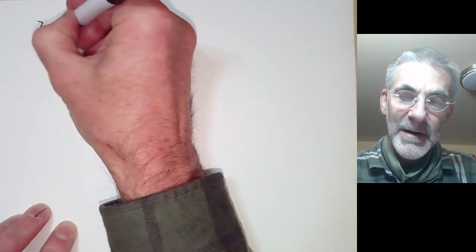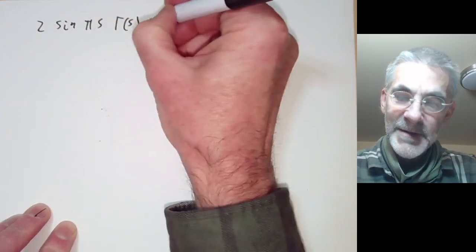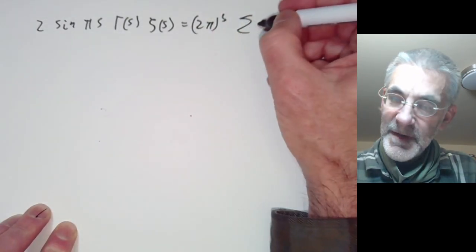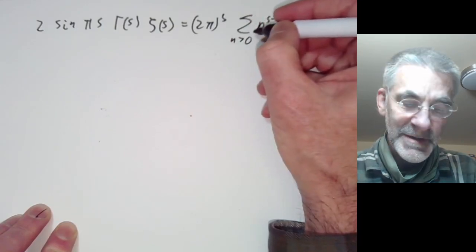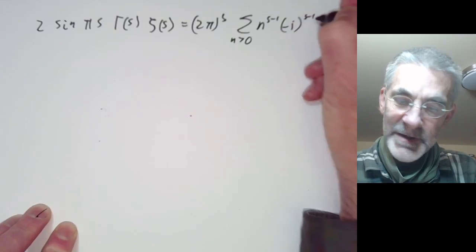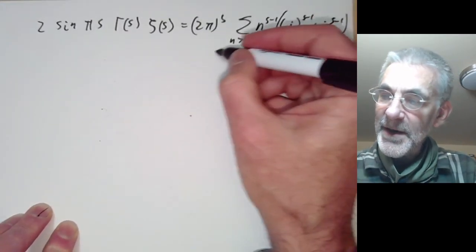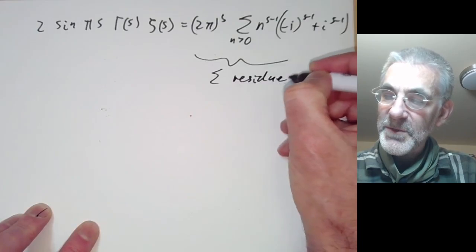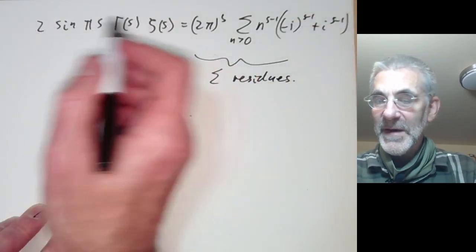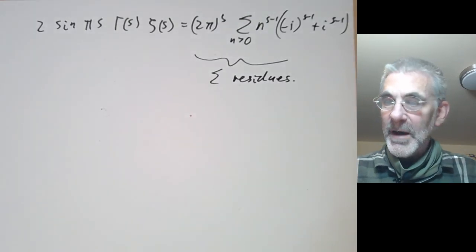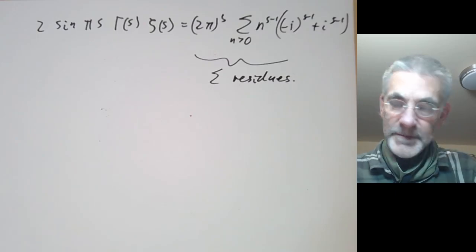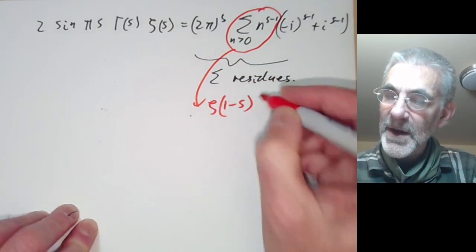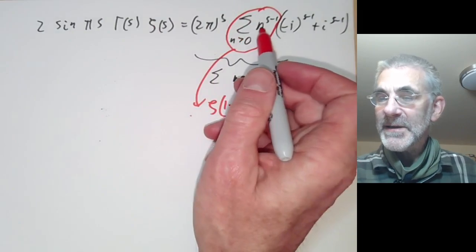Putting everything together, we get: 2 sine(πs) times gamma(s) times zeta(s) equals 2π to the s times the sum over n greater than zero of n to the s minus 1 times (minus i to the s minus 1 plus i to the s minus 1). The sum over residues gives a factor of 2πi or similar, and the integral gives the zeta function. Riemann noticed that this sum is just zeta(1 minus s), giving a formula relating zeta(s) to zeta(1 minus s).